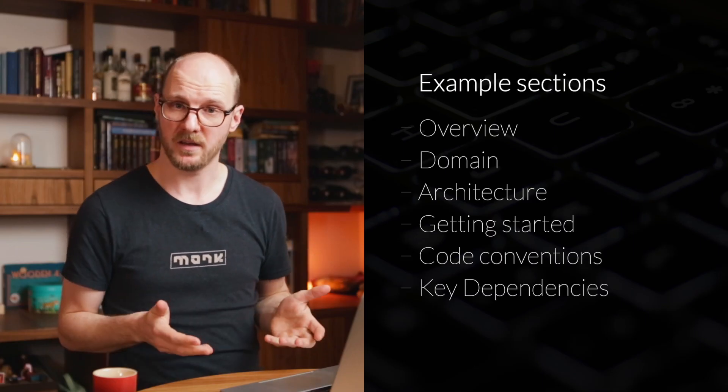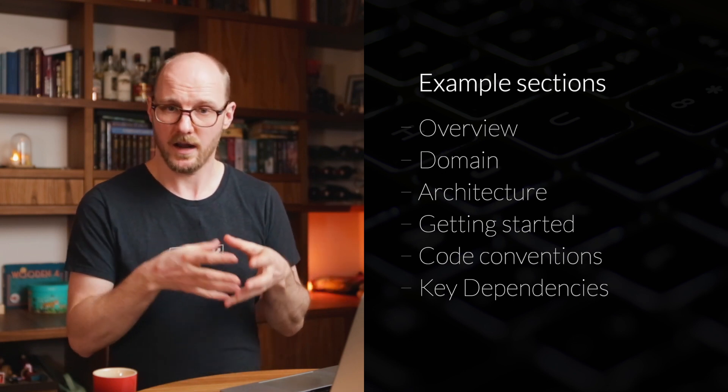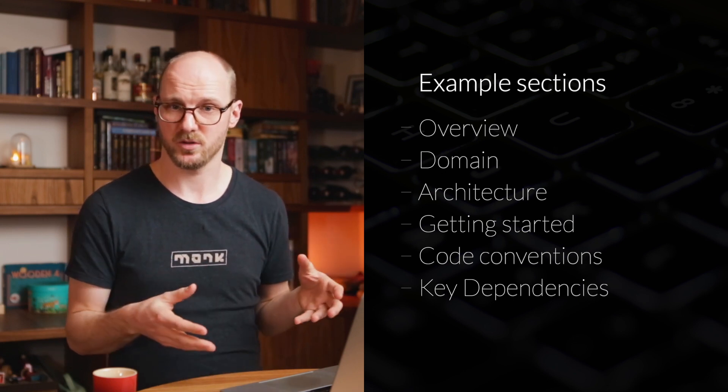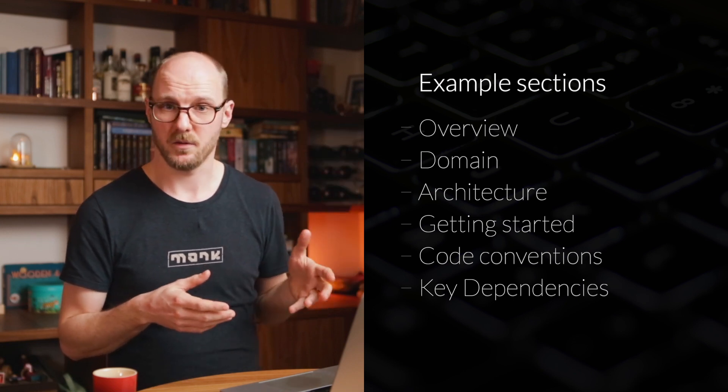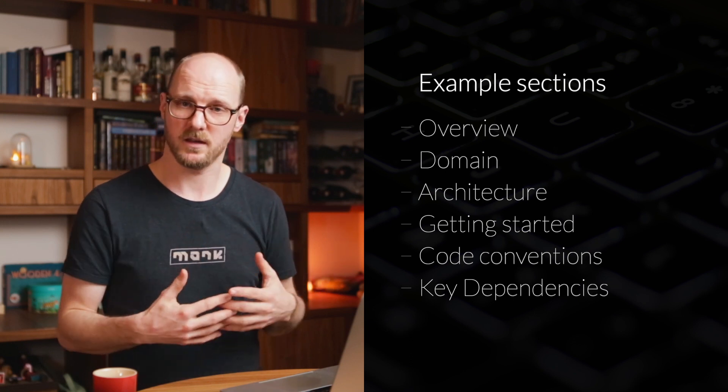Another useful section is dependencies. If you have a few key dependencies that heavily influence the structure of your project — because you use a framework or a combination of frameworks in a certain way — then you probably want to mention this. Don't list everything; there's no use in that. List the important ones. If you don't really have important ones because it's all an obvious standard stack, then you probably don't want this section at all.